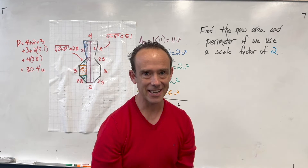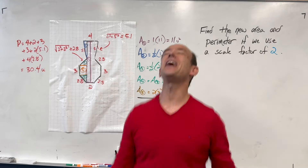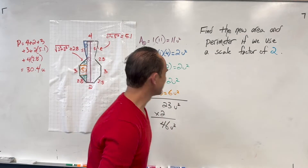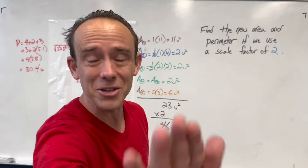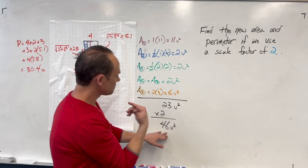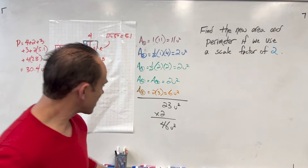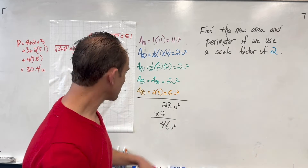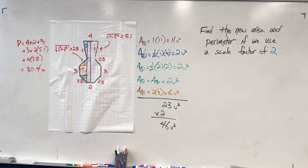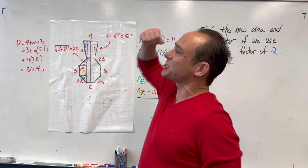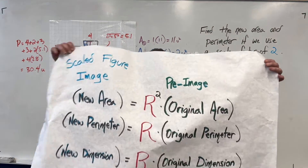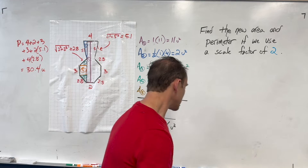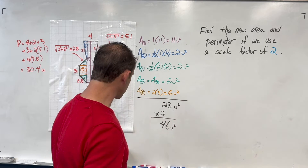If I had a nickel for every student who told me the area is twice that — 46 × 2 = 92 — I'd be rich. But we know that's not how area moves. Area moves with the square of the scale factor, not just the scale factor itself.